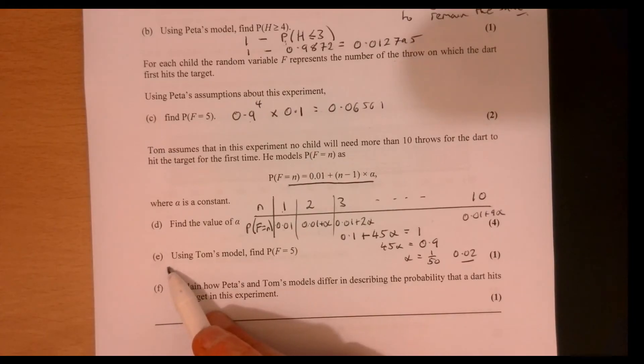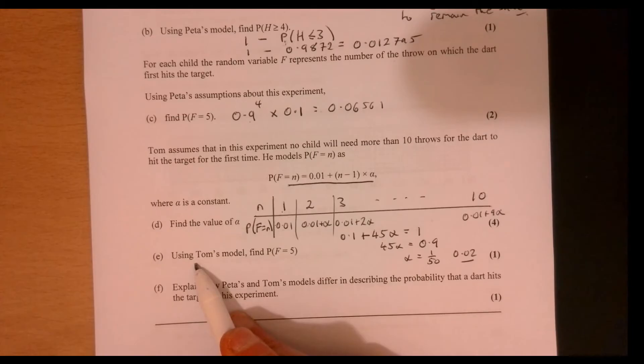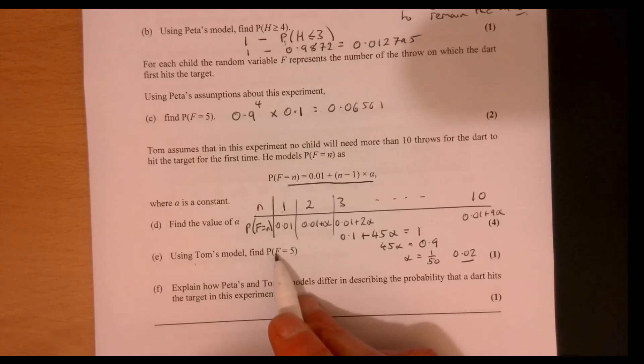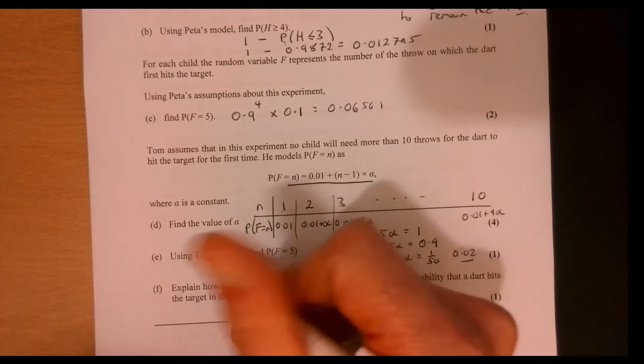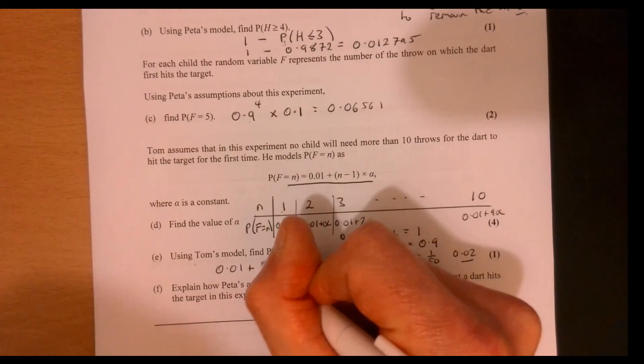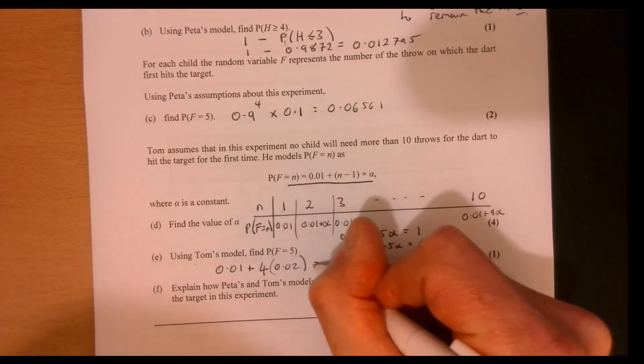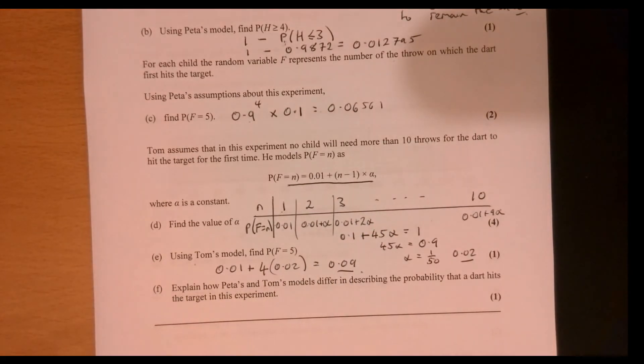So part E, relatively straightforward. Even if you couldn't do part D, you could do E, although you don't know this bit here. But this one here is just going to be plugging 5 in. And now we know what this figure is. So it's just going to be 0.01 plus 4 lots of 0.02. So if you work that out, you get 0.09.